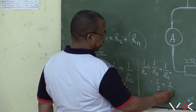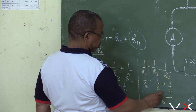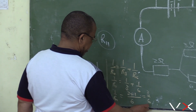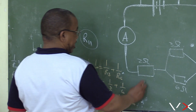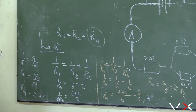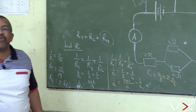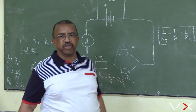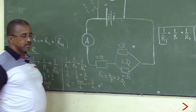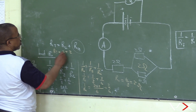One over three plus one over six equals one over R parallel. The LCM is 6: two times one is 2, plus 1 over 6 - one times one is 1. So 1 over R parallel equals 3 over 6. Therefore R parallel equals 6 over 3, which is 2 ohms. So R total equals 2 plus 2, which is 4 ohms.